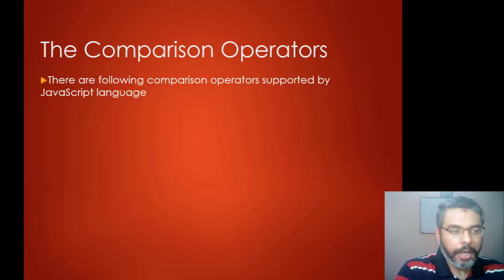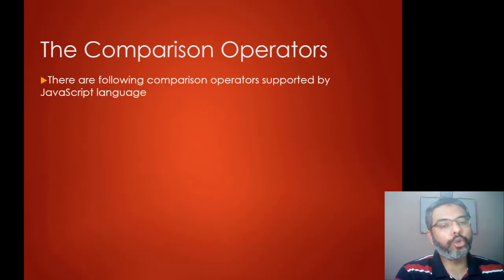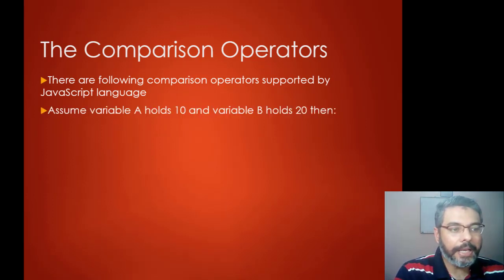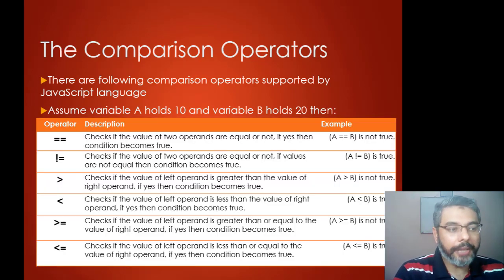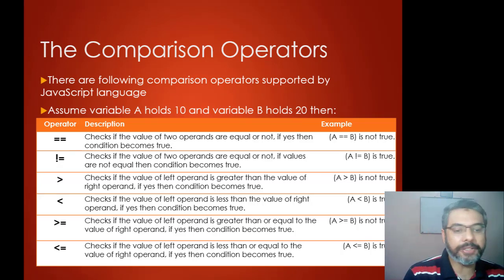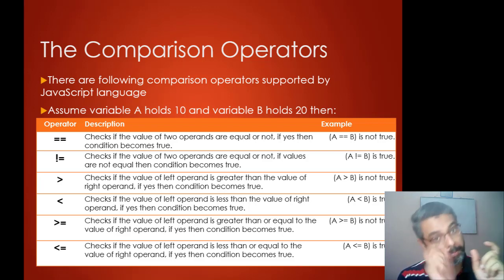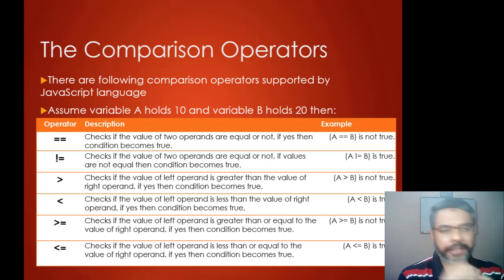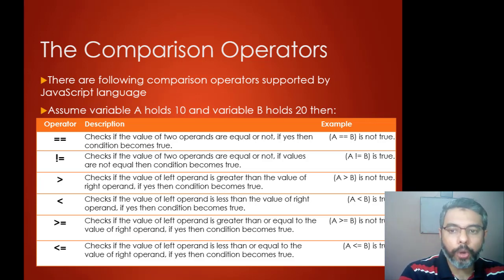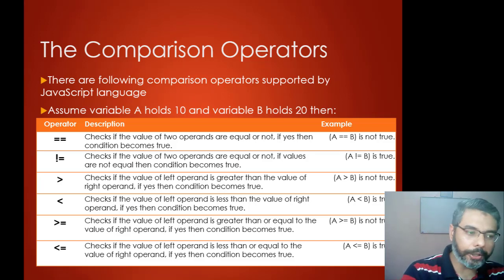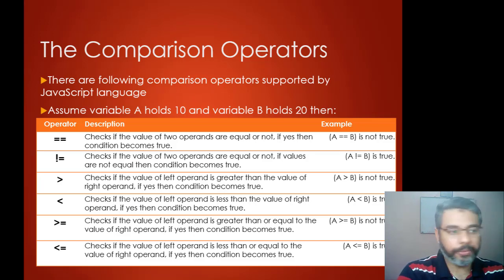Comparison operators are operators used to compare two values of a variable or two variable values. For example, if variable A holds value 10 and variable B holds value 20, we use comparison operators to compare those values. They usually return an answer in the form of true or false. The six major comparison operators are: equal to, not equal to, greater than, less than, greater than or equal to, and less than or equal to.